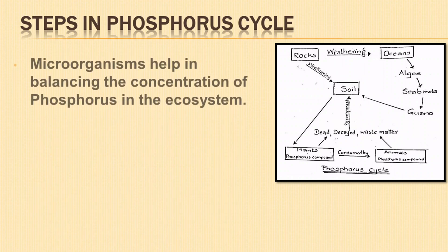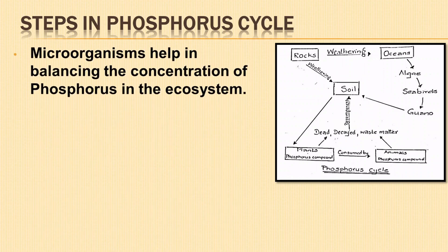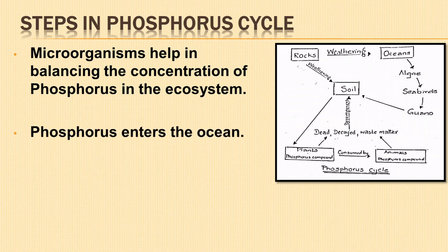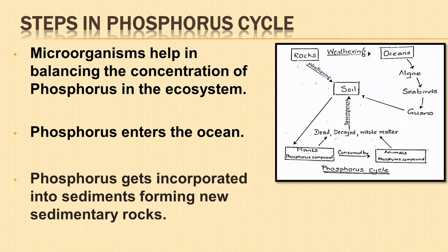Microorganisms like fungi and bacteria help to balance the concentration of phosphorus in the ecosystem. Phosphorus in soil passes through various water bodies and ends up in oceans. Runoff may carry some amount of phosphorus back into the ocean, where it gets incorporated into sediments forming new sedimentary rocks, and the cycle continues.